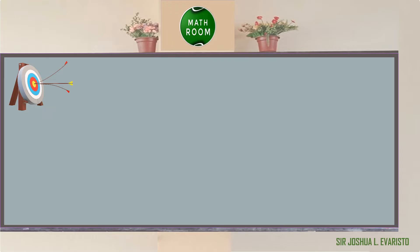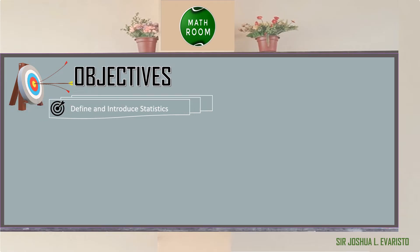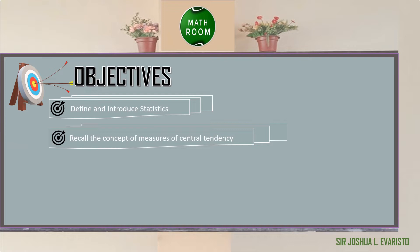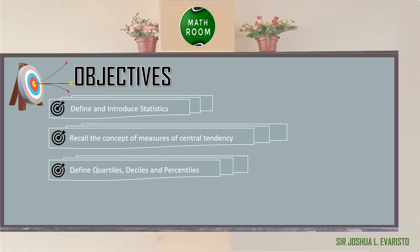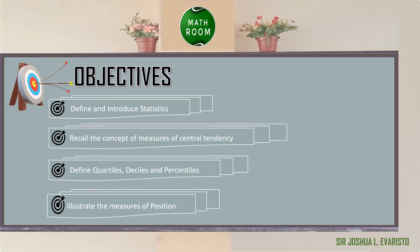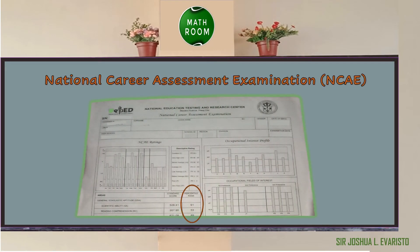Before we proceed on our discussion, let me present to you our objectives. At the end of this lesson, you should be able to define and introduce statistics, recall the concept of measures of central tendency, define quartiles, deciles, and percentiles, and illustrate the measures of position. Let's get started.